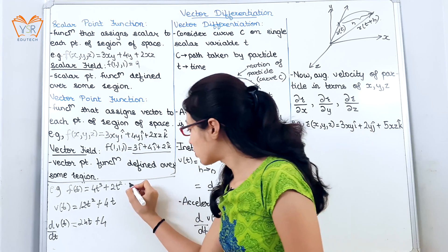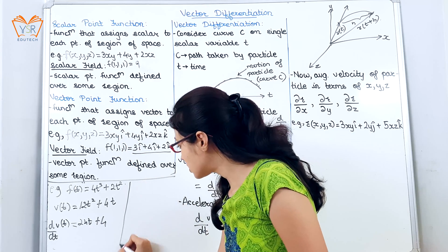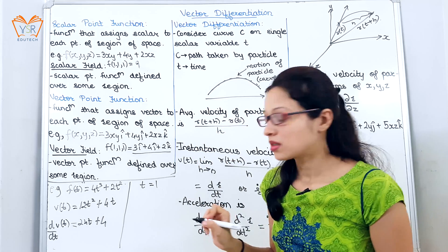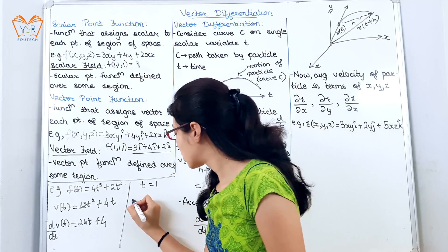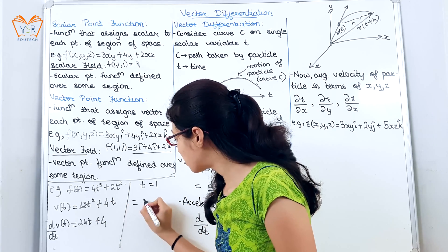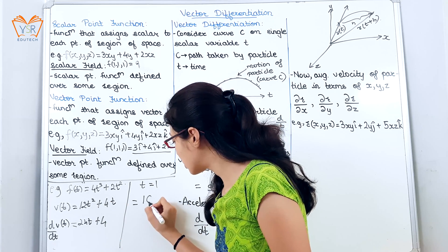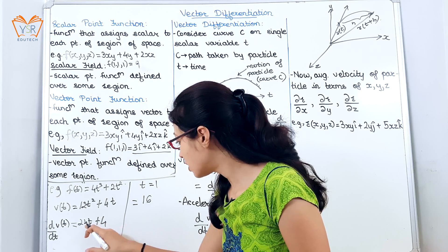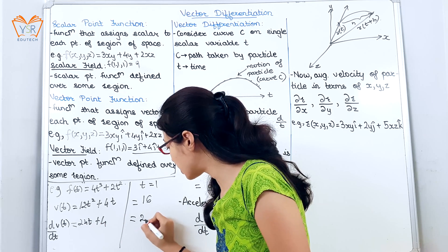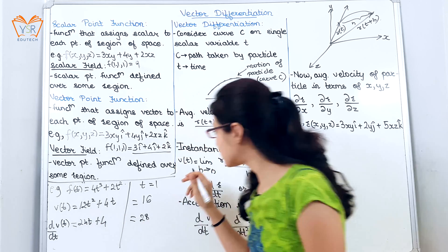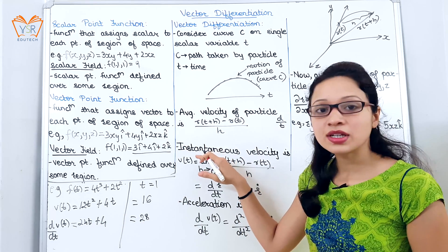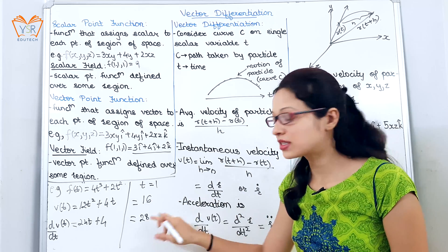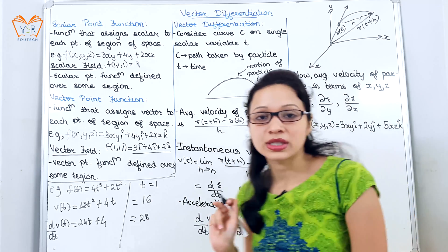For more information, we will substitute t = 1. So v(1) = 12 + 4 = 16, and a(1) = 24 + 4 = 28. So we can say the instantaneous velocity is 16 and the acceleration is 28.